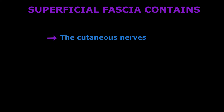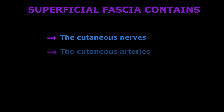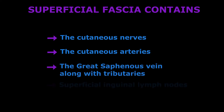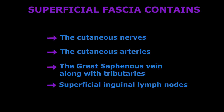The contents of the superficial fascia include the cutaneous nerves, the cutaneous arteries, the great saphenous vein along with its tributaries, and the superficial inguinal lymph nodes. Now let us study the contents of the superficial fascia one by one in detail.